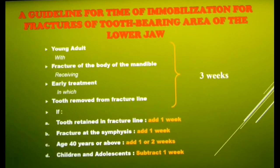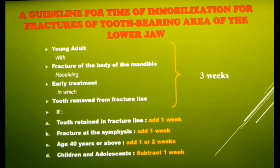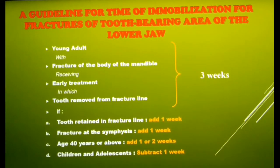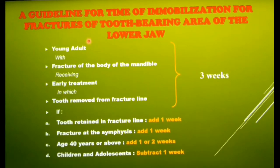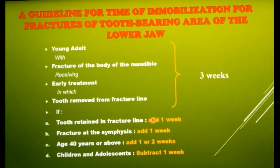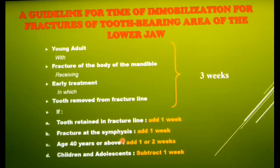The duration of intermaxillary fixation depends on various factors. As a guideline, the period of immobilization for a young adult with fracture of the body of the mandible receiving early treatment in which the tooth is removed from the fracture line is 3 weeks. Any deviation from this will alter the IMF period. Add one more week if the tooth is retained in the fracture line or if the fracture is at the symphysis. Add a week or more if the patient is over 40 years of age, whereas in children, mobilize the fracture site in 2 weeks.